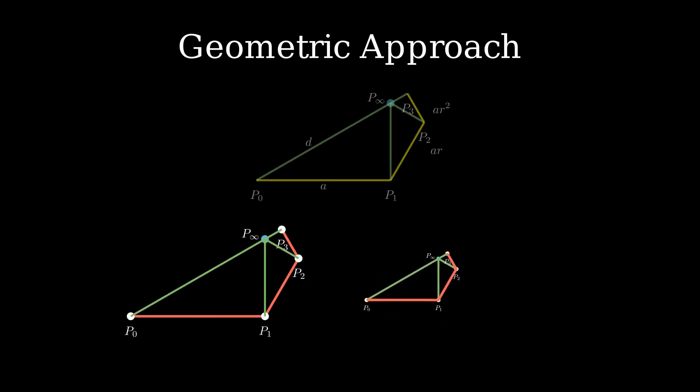Now, let's scale this by a factor of R, rotate it by an angle of theta, and shift it so that P0 prime coincides with P1. Observe that due to the self-similar nature of the figure, there is a perfect match. That is, P2 coincides with P1 prime, P3 coincides with P2 prime, and so on.